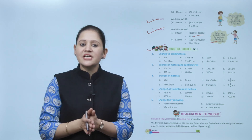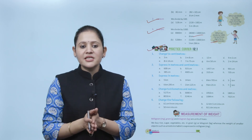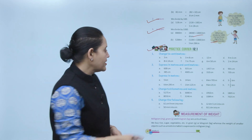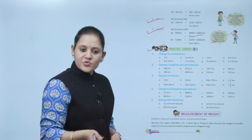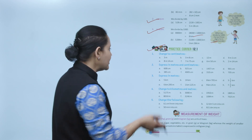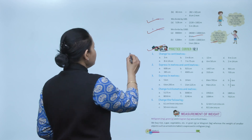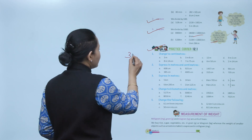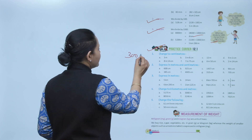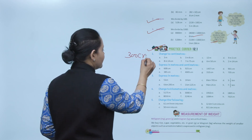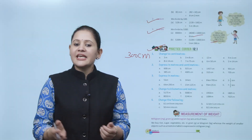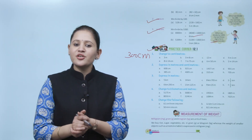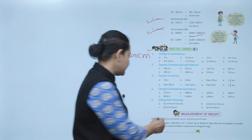Change to centimeters: 3 meters. As we know, 1 meter equals 100 centimeters, so 3 meters equals 300 centimeters. Practice all the questions of this exercise. Next is measurement of weight.